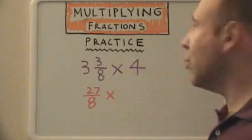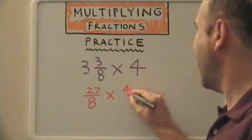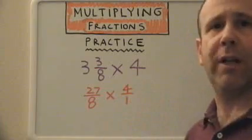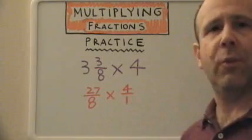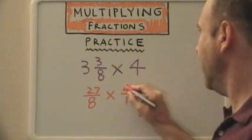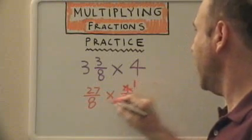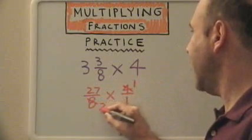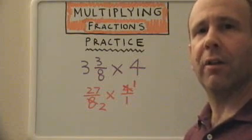Change this four to a fraction by adding our fraction bar and a denominator of one. We see if we can cross-cancel, which we can. Four goes into itself once. Four goes into eight twice. Now we multiply across.